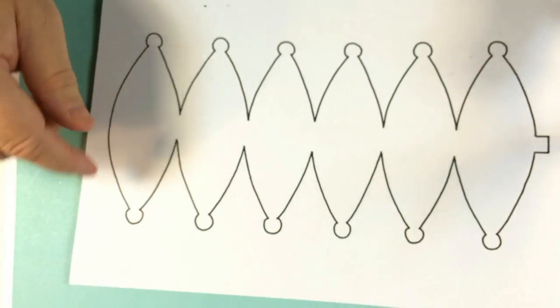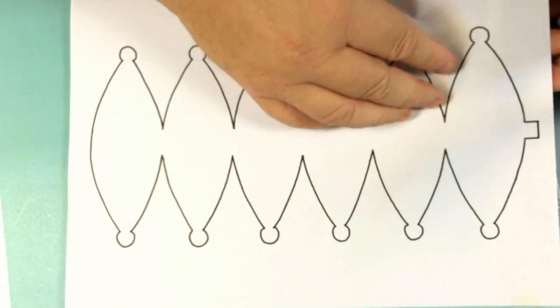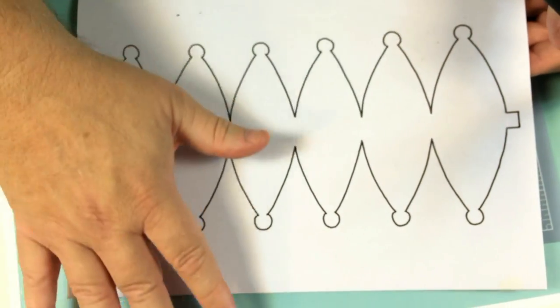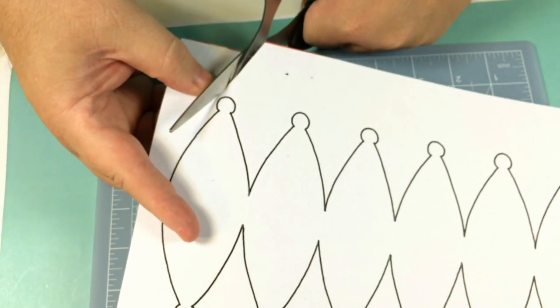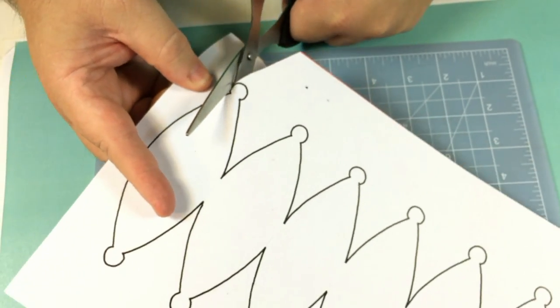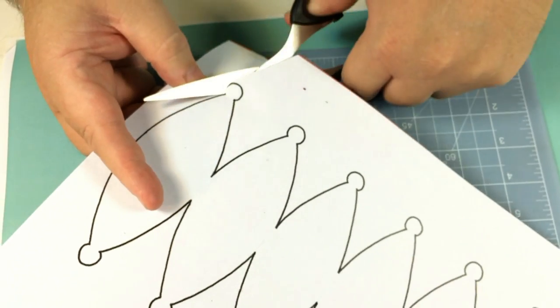Now if you've got a bigger sheet of card or paper, you could trim round this, just the paper, position it on the card so you're not wasting as much. But for this project, I'm just going to show you in this demonstration how I do it with this size.